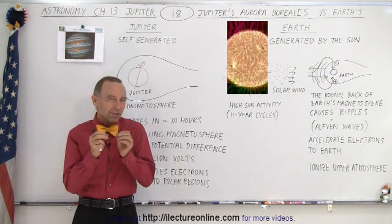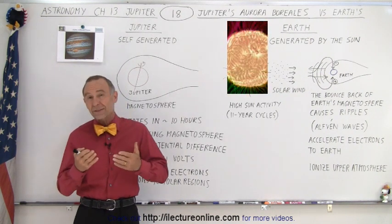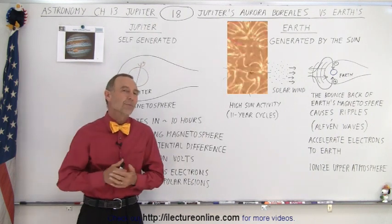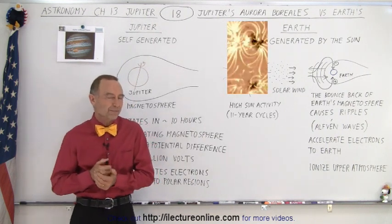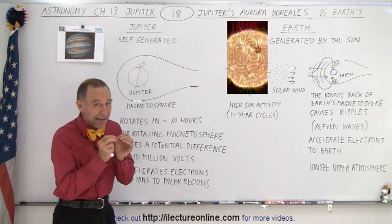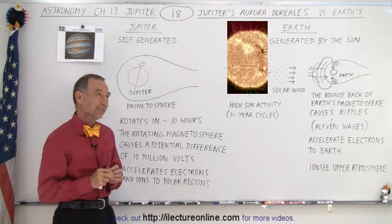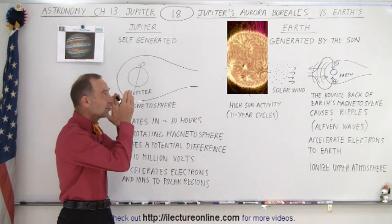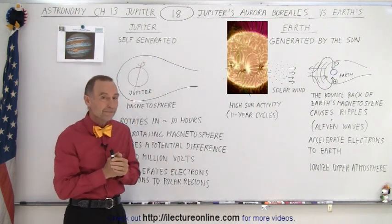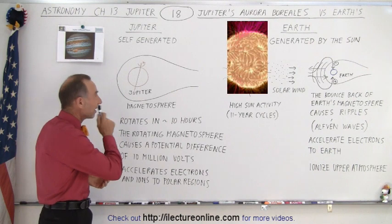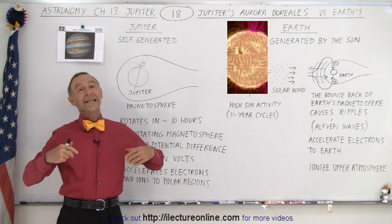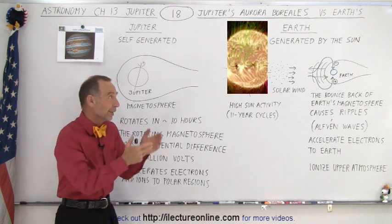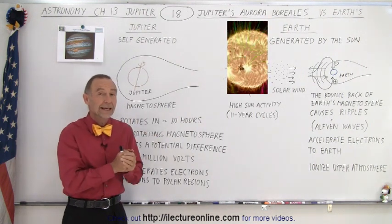Before we get into the details, let's look at the differences between the Earth's Aurora Borealis and Jupiter's Aurora Borealis. It turns out the main difference is that the Earth's is generated by the Sun and Jupiter's is self-generated. That alone would indicate there's a huge difference between how the Aurora Borealis is generated on the Earth and on Jupiter.